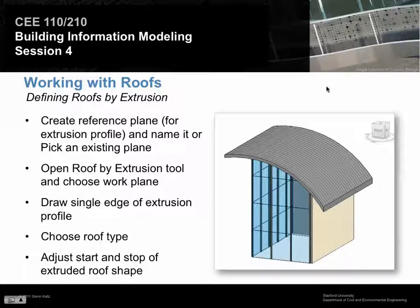To use Roof by Extrusion, we have to draw our profile first. Often we draw on the ground, but in this case we want to draw on the elevation of something — on the surface of a wall — because we want to draw this curving shape there. We can either create a reference plane and draw on that, or pick an existing plane, like the plane of one of the walls. We have to set the working plane — that's the drawing surface — to be one of the vertical surfaces.